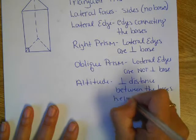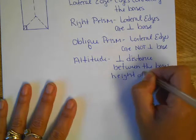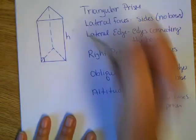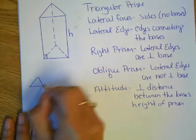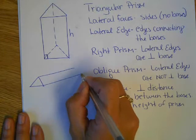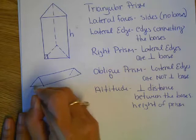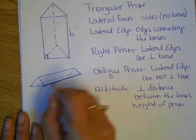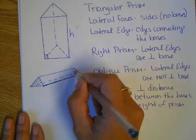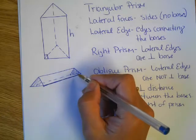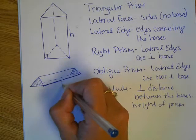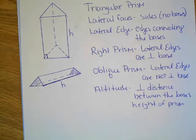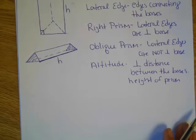And then the altitude is the perpendicular distance between the bases. And that is the height of the prism. So in this case, the distance between the triangles is the height. Now if I was to draw this triangular prism on its side, the height is still this perpendicular distance. So think of the bases as the top of your head and the bottom of your feet. Just like you, even when you're laying down, if they're going to say how tall are you, they're going to measure from your head to your feet. So it can be standing up, it's the distance between the triangles. If it's laying down, the height is still the distance between the triangles. So let's move into actually finding lateral area and surface area.